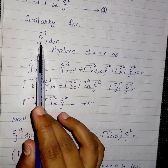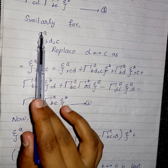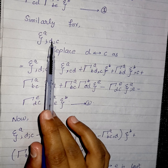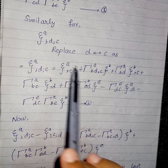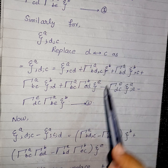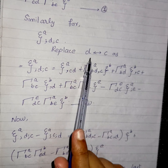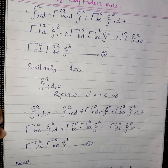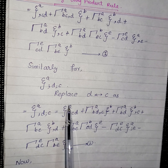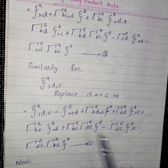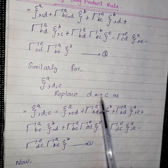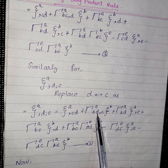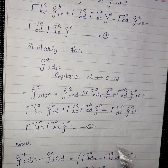In a similar manner, we want to find ξ^A semicolon D semicolon C, meaning the covariant derivative of ξ^A with respect to D and then again with respect to C. Note that previously we took the derivative first with respect to C then D; here we write D first — this means we are carrying the contravariant vector along two different directions. The procedure is simple: just replace D by C in equation number one. So ξ^A_C,D becomes ξ^A_D,C, and Γ^A_BD becomes Γ^A_BC with D replaced by C accordingly — giving us equation number two.